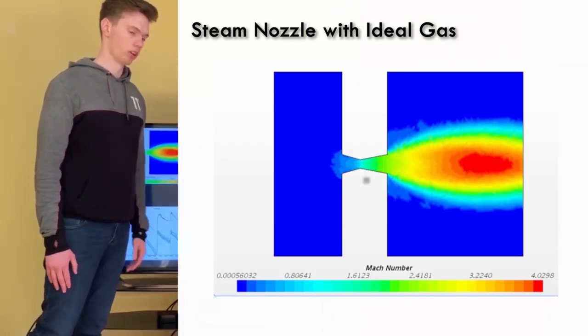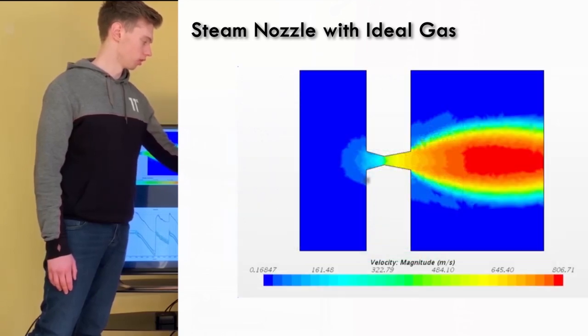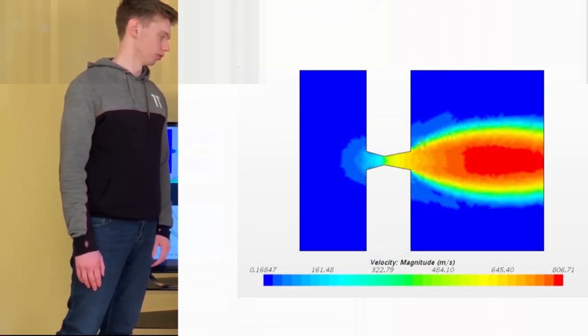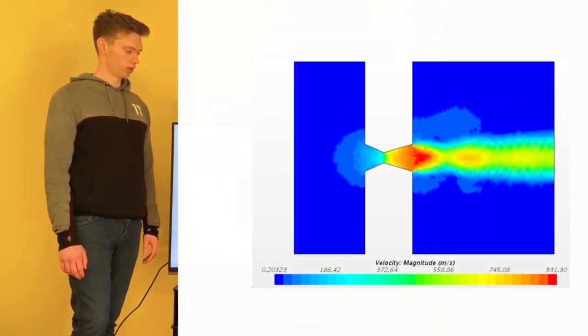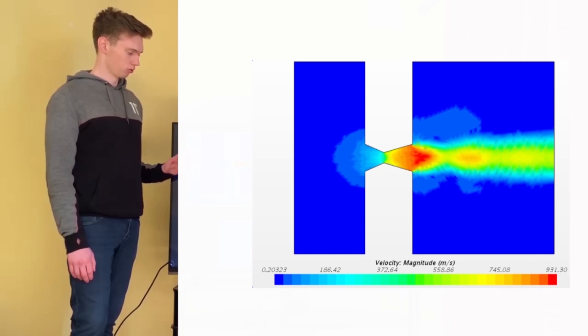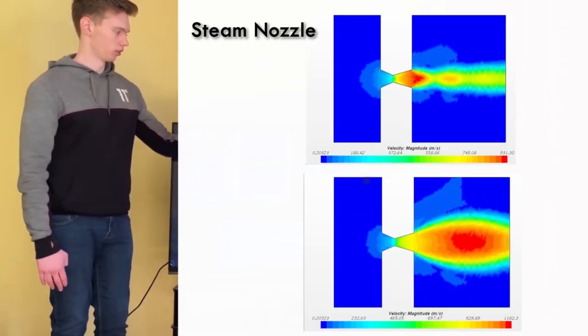And the velocity is about 800 meters per second at the exit and about 400 meters per second at the throat. The residuals converged quite well. So the next nozzle then is the steam nozzle. The first number of simulations we ran, it wasn't really expanding the way we wanted to.